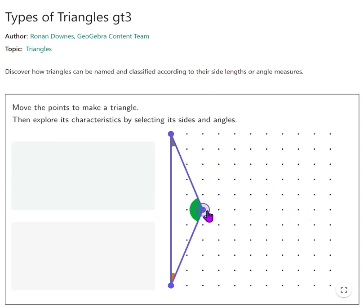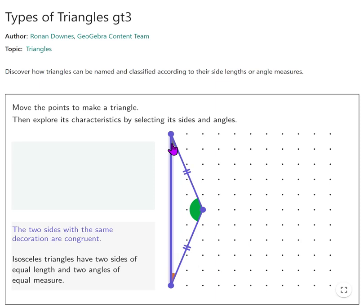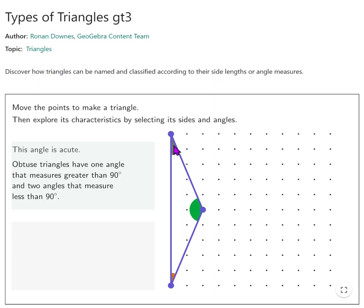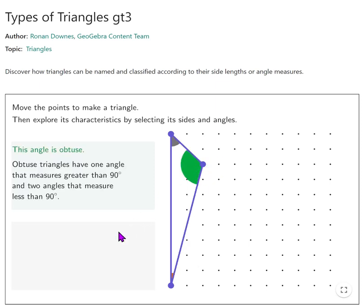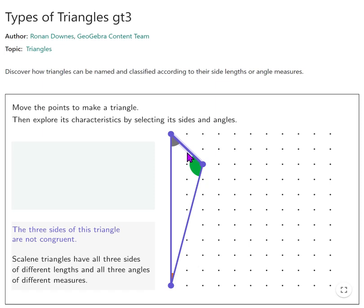We can make it an obtuse triangle. While that angle is acute, and this angle is acute, this angle here is obtuse. So we can have a scalene obtuse triangle. Because the three sides are not the same, and we say they're not congruent, because they don't have the same measure of length.